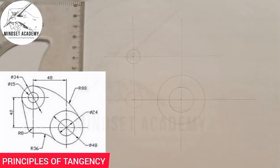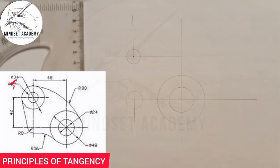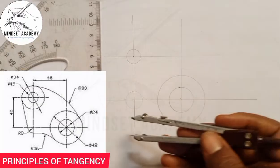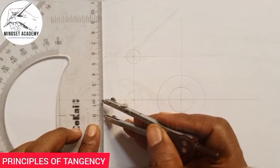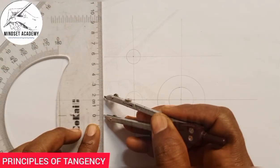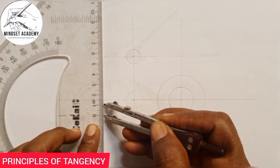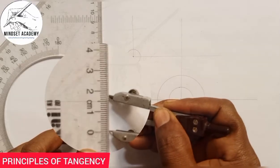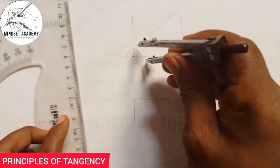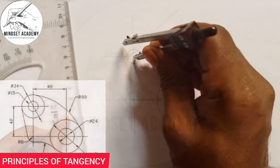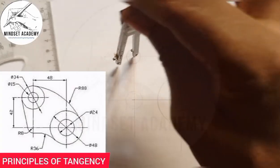The bigger circle at this center has diameter 34, so I need the radius which is 17. I take 0 to 17 on my meter rule, place it at the center point, and draw that circle.